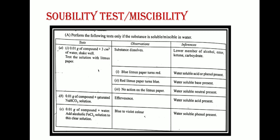The second step is the solubility test. We will see whether the compound is soluble in water. If soluble, take 0.01 gram of compound plus 3 ml water, shake it well, and test the solution with litmus paper. If the substance dissolves, lower members of alcohol, ester, ketone, or carbohydrates may be present. If blue litmus turns red, a water-soluble acid or phenol may be present. If red litmus turns blue, a water-soluble base may be present. If there is no action on litmus, a water-soluble neutral compound is present.